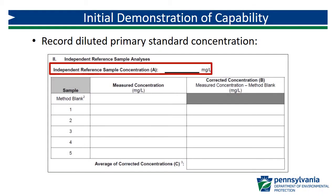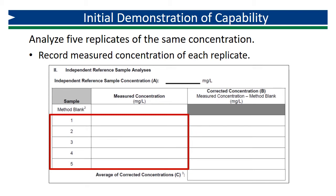Looking back at the IDC form, the aqueous check standard concentration is recorded in the field called Independent Reference Sample Concentration. This is the concentration of the prepared or diluted primary standard. Once you have prepared your diluted primary standard, you will analyze five replicates and record each result in the corresponding field under the measured concentration column. It is critical that each replicate is run as a discrete sample with each step repeated from beginning to end.